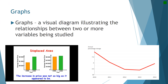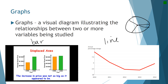Today's focus will be on graphing. A graph is a visual diagram that illustrates the relationship between two or more variables being studied. We could have bar graphs, line graphs, or pie charts. In this class, we primarily will be doing line graphs. Line graphs do a really good job of explaining overall relationships between two variables.